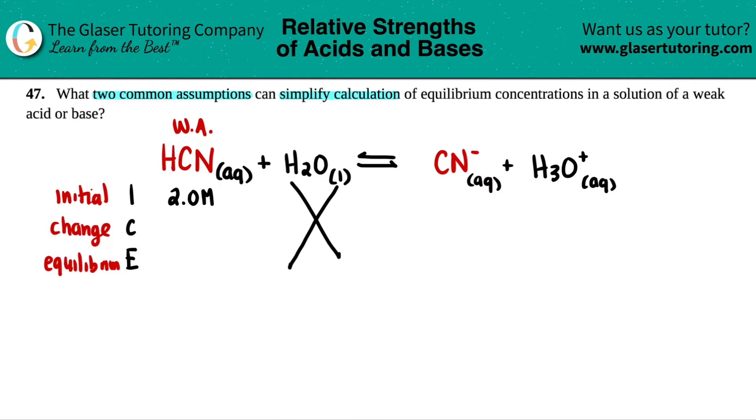So that's basically one assumption. The one assumption is that we can disregard any additions from water. So assumption number one, we assume that water, H2O, does not add concentration to H3O plus. Because if we did assume that, the math would be very, very hard for us. So we make an assumption that this is just acting as the solvent and it's not donating any additional H3O plus to the solution.